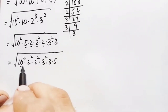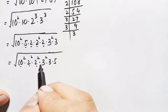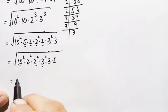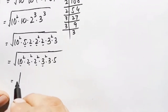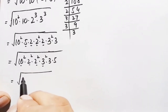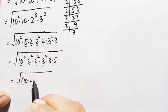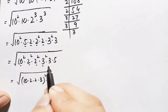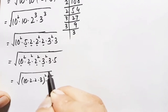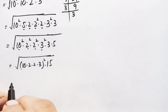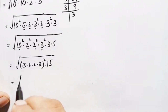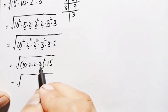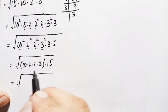Since there is a square root over all these squared numbers, we take out the square roots of the perfect square factors. This gives 10 times 2 times 3 outside the root, with √(2×3×5) = √30 remaining. Multiplying: 10×2 = 20, 20×2 = 40, 40×3 = 120. So we get 120 times √30... let me recheck: it is 120 times √15.